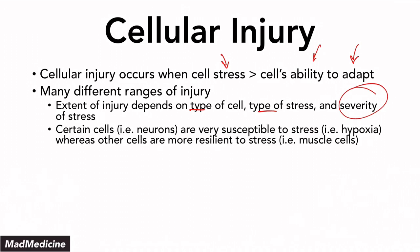Certain cells, like neurons, are actually very susceptible to stress because they go through hypoxia very quickly and are not able to tolerate much stress — their stress tolerance is very little. But there are other cells that are more resilient to stress, like muscle cells. Our muscle cells are able to manage more stress than our brain cells, so their range of stress management is greater.